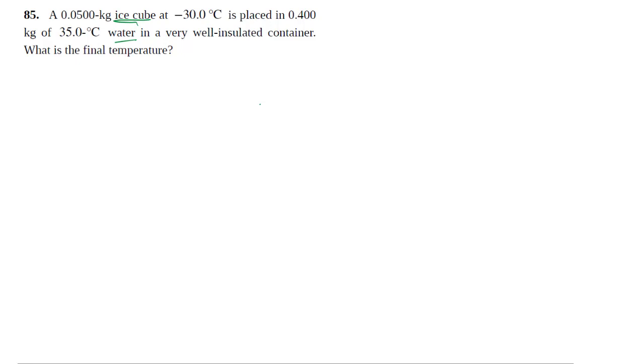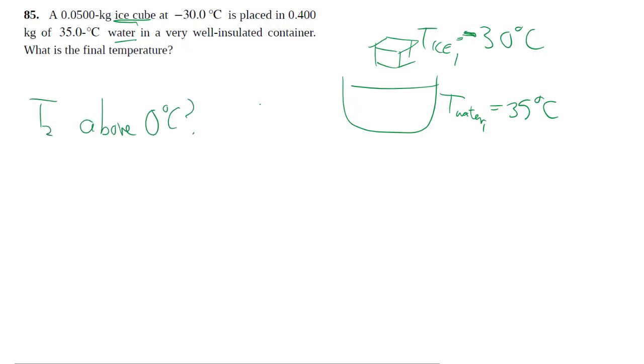You have to first of all ask the question, you have to kind of see who wins. When you combine a piece of ice that is at minus 30 degrees celsius and some water at 35 degrees celsius, you want to know by the end of everything, are we going to have a bucket of water or a big block of ice? Zero degrees here being the critical temperature because that is the melting point of water.